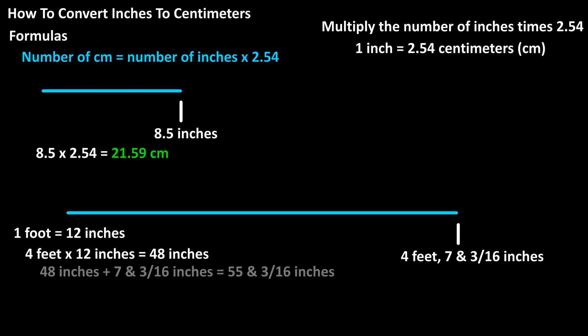We then add 48 inches and 7 3/16 inches, which equals 55 3/16 inches. Next, we need to convert the fraction 3 over 16 to a decimal by dividing 3 by 16, which equals .1875. So, we have 55.1875 inches.